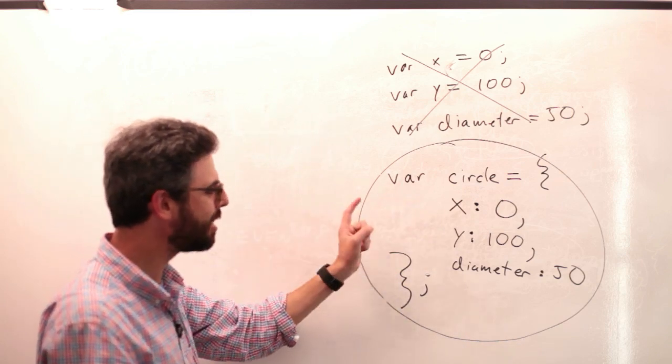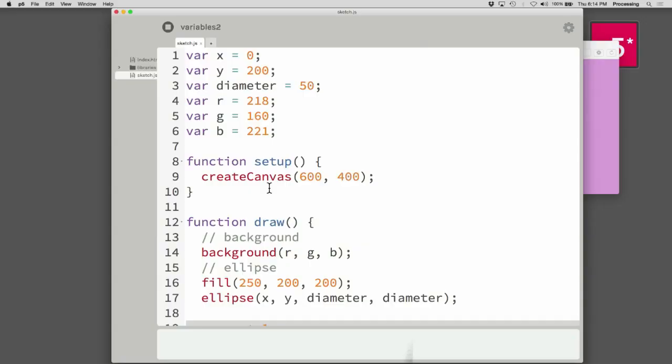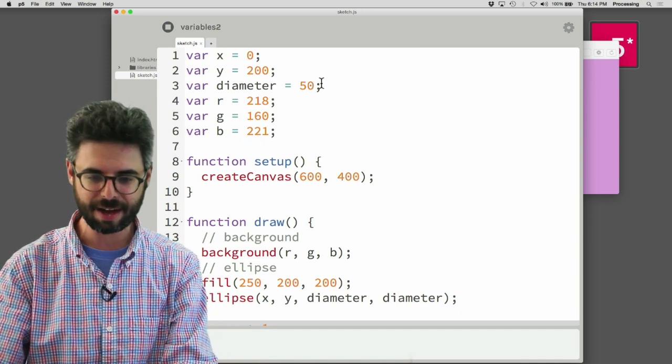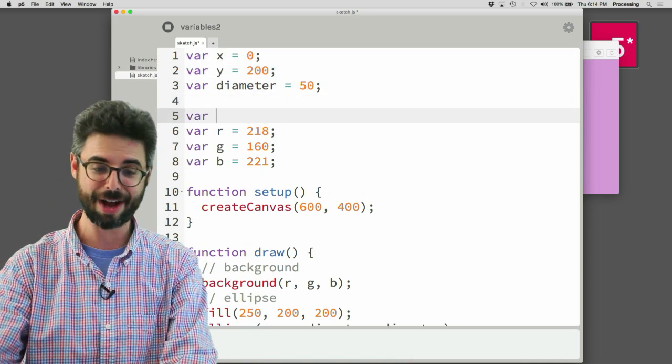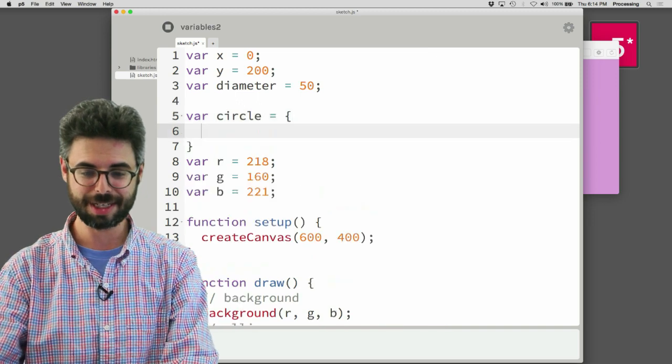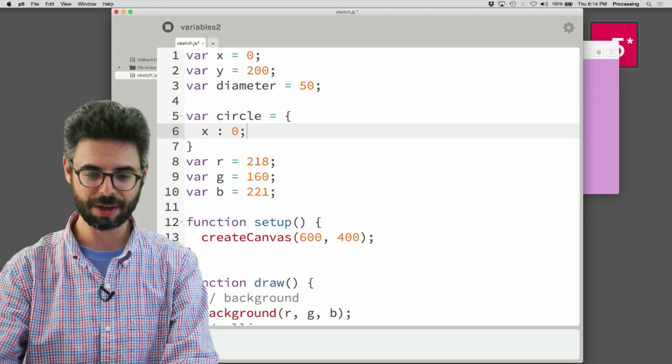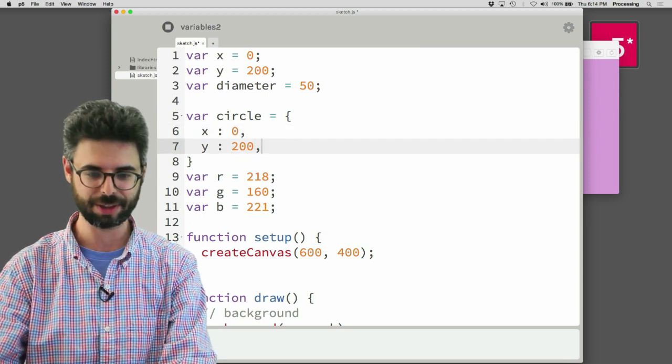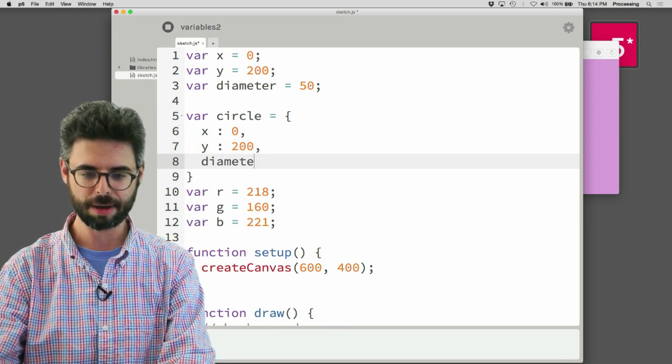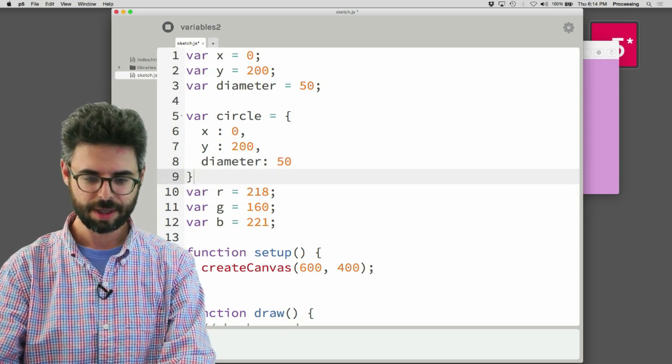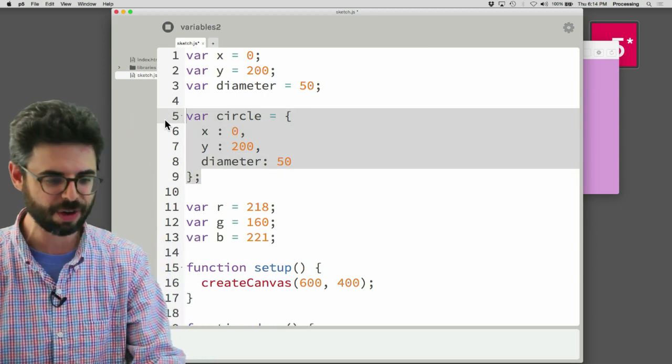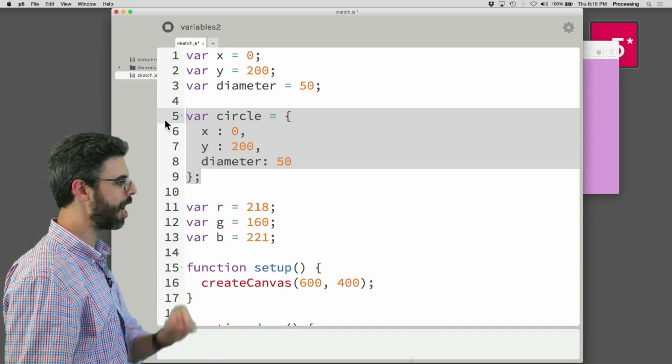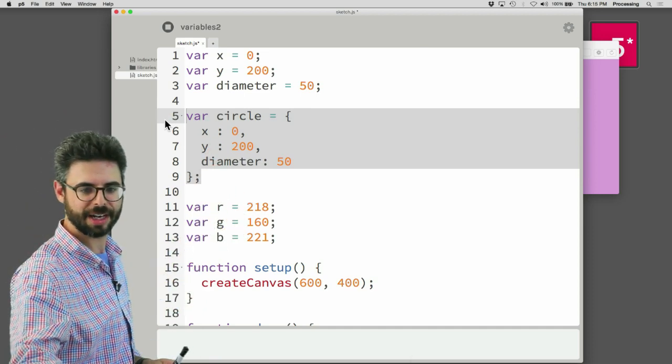So let's now look at how we implement this in the code. So I'm coming back over here, and instead of these three variables, we're going to find out if I did this correctly syntax-wise. X colon zero, Y colon 200. Oops, I put a semicolon there. Comma is actually correct. And then diameter colon 50. So this is really one line of code. It ends with a semicolon, but I'm breaking it into separate lines. I'm going to use p5 editor's auto-format.